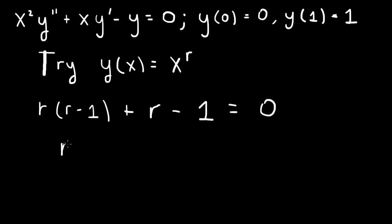And if we rewrite this, this is a quadratic: r squared minus r plus r is 0. So r squared minus 1 equals 0. And that has two roots, r equals plus and minus 1.